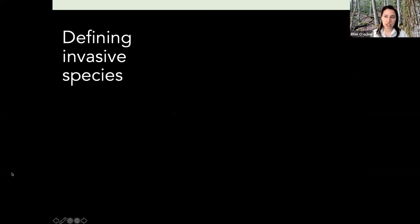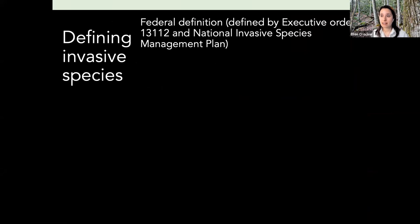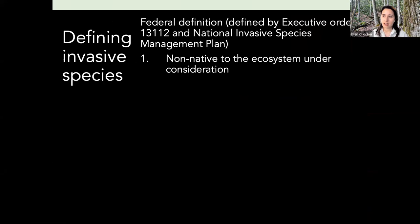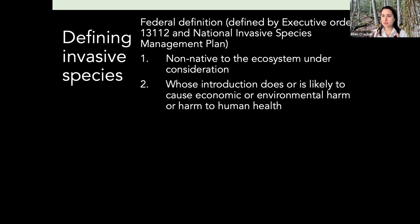So how do we define invasive species? This is important to start with because 'invasive' is used casually in conversation — something invading your yard, or something that colonizes rapidly. But the federal definition is more specific. It has two components: first, something that's not native to the ecosystem — it's from some other part of the world, typically Asia or Europe, and wouldn't naturally be here. And second, the introduction of this organism causes economic, environmental, or human health harm. Basically: they're not from here, and they're bad.